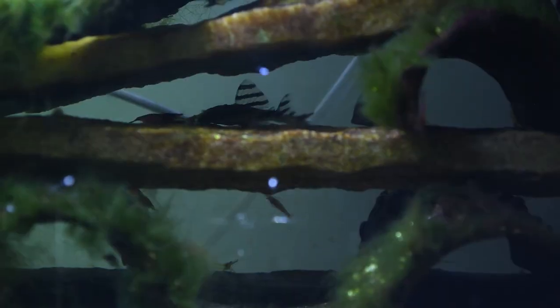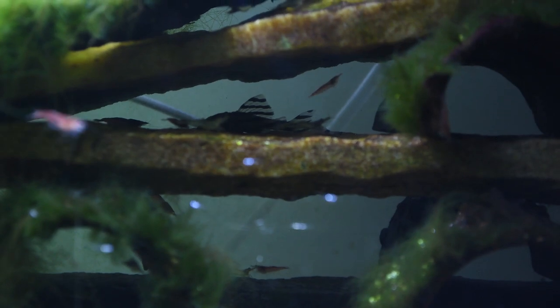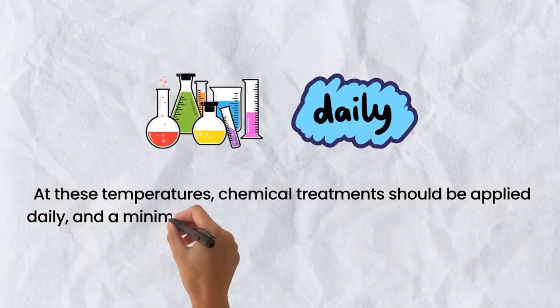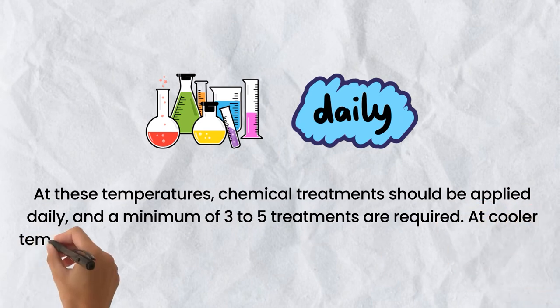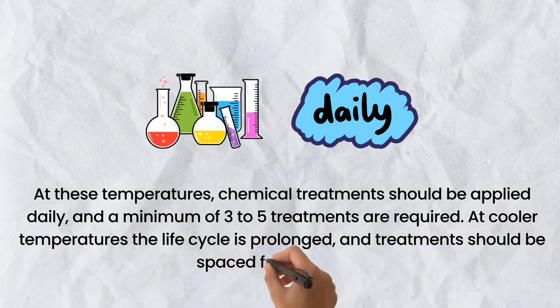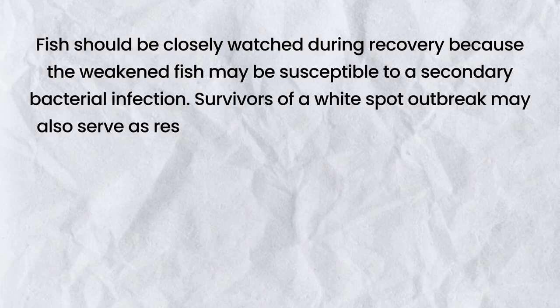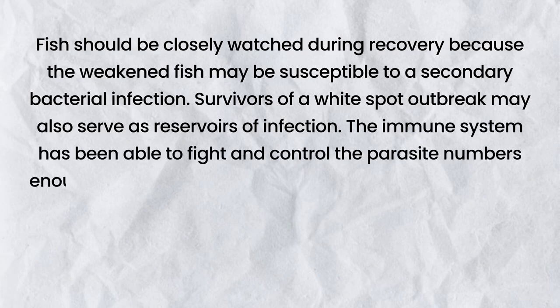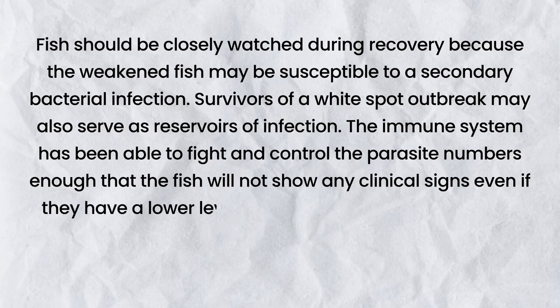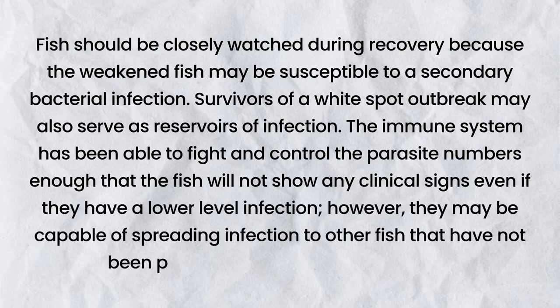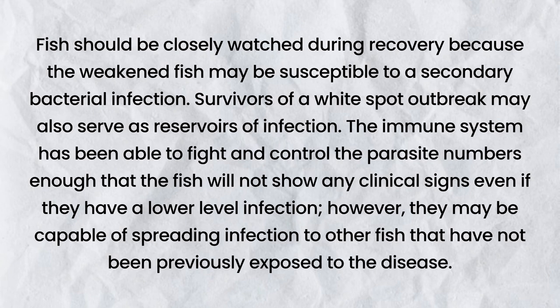Water temperature has a tremendous influence on how fast the Ich life cycle is completed. At warm temperatures of 28 to 31°C, the life cycle is completed in about three to six days, and chemical treatments should be applied daily with a minimum of three to five treatments required. At cooler temperatures, the life cycle is prolonged and treatments should be spaced further apart. Fish should be closely watched during recovery, as weakened fish may be susceptible to secondary bacterial infection. Survivors of a white spot outbreak may also serve as reservoirs of infection, capable of spreading it to other fish.